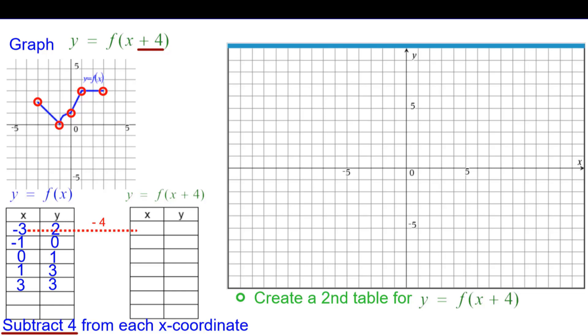So negative 3 minus 4 is negative 7. We keep the y coordinate the same, 2. So negative 7 comma 2. Negative 1 minus 4 is negative 5, keeping the 0. Negative 5, 0. 0 minus 4 is negative 4, keeping the 1. Negative 4 comma 1.